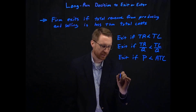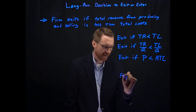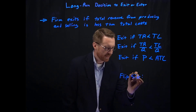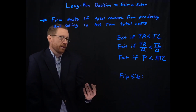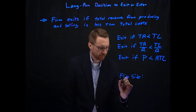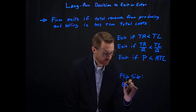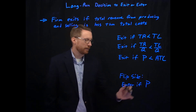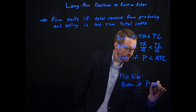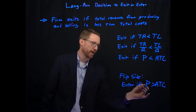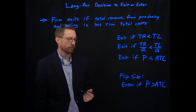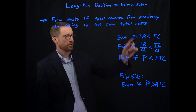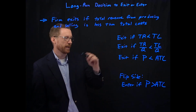The flip side is also true — firms enter markets as well. A firm will enter if it thinks it can sell for more than it costs to produce. So if price is greater than average total cost, a firm is going to enter the market.